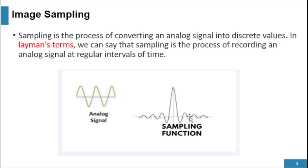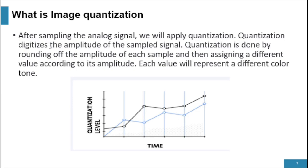In the sampling image, each interval has its own value and they are different from each other. This continuous image contains continuous signals and is known as the analog image, while the sampling function image consists of pixels that are each different from others, with discrete values at regular intervals. After sampling the analog signal, we apply quantization. The process applied after sampling on the analog signal is called quantization. Quantization digitalizes the amplitude of the sampled signal.